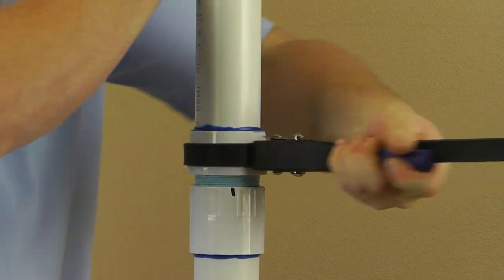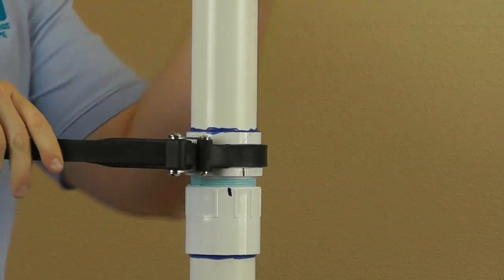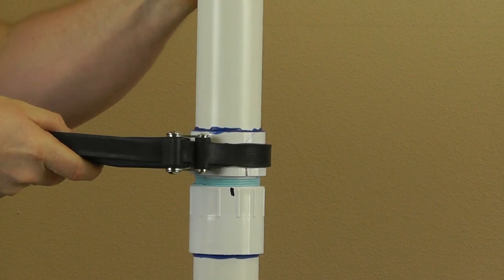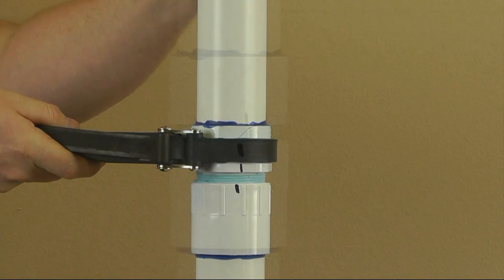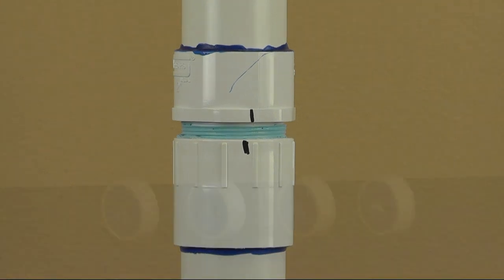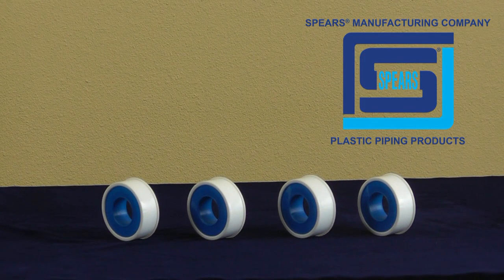In this case, approximately two completed turns were used to achieve a good joint. Now we will demonstrate the use of a PTFE thread sealed tape.